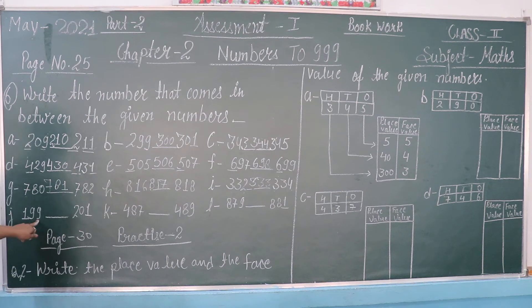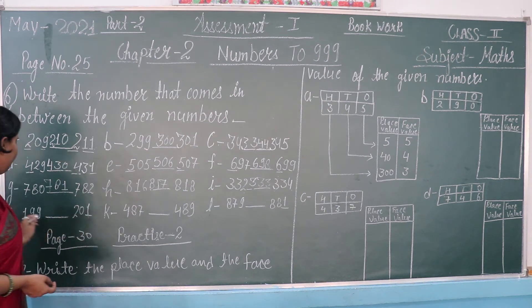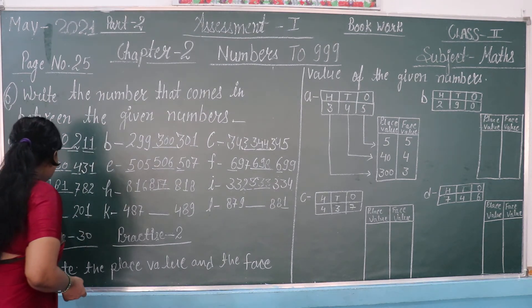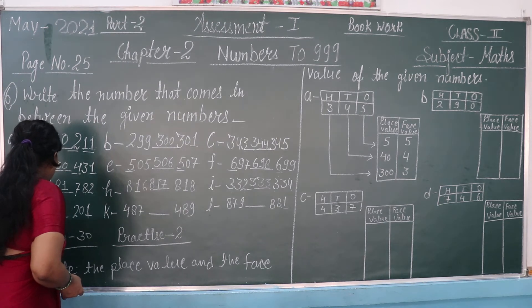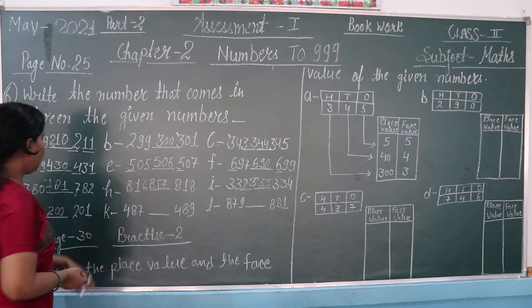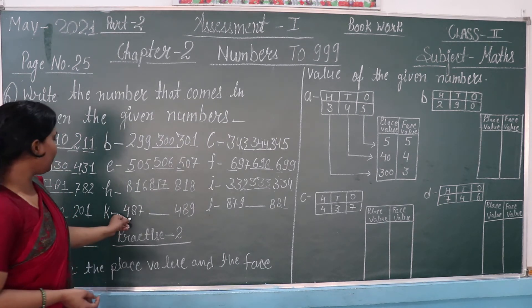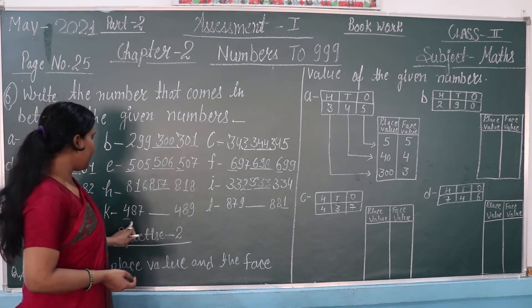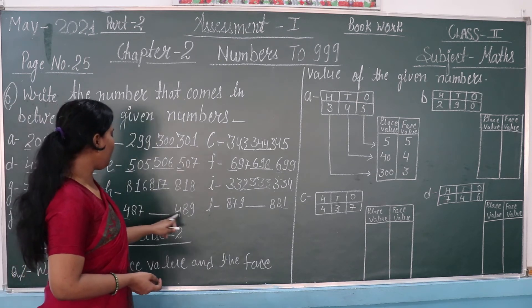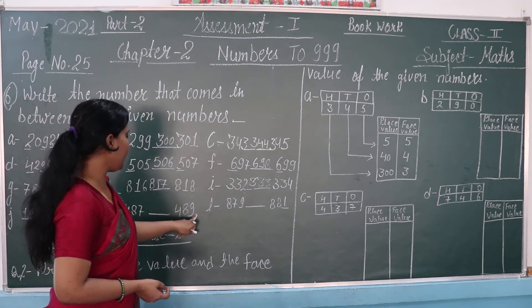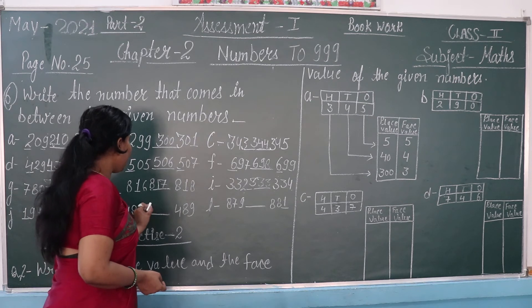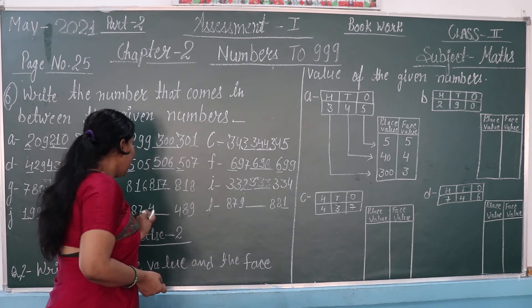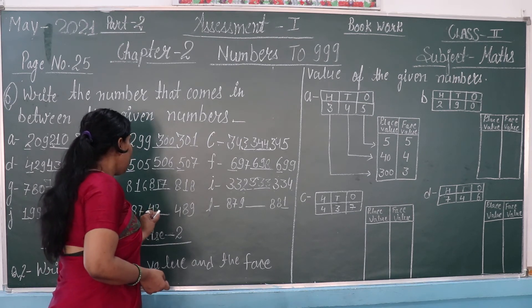Next: 199 and 201 — the number that comes between both will be 200. Next: 487 to 489 — the middle number is 488. This is in the area of 400.